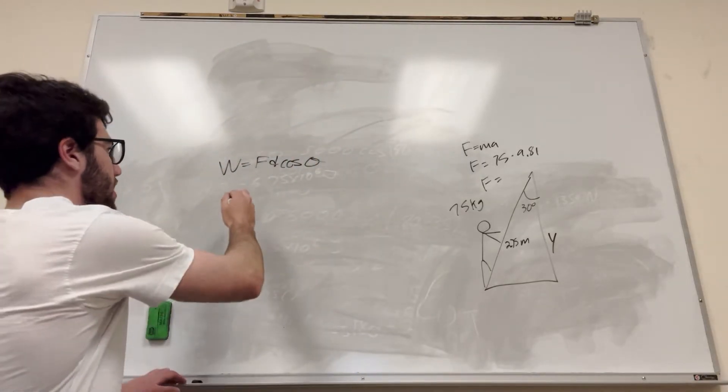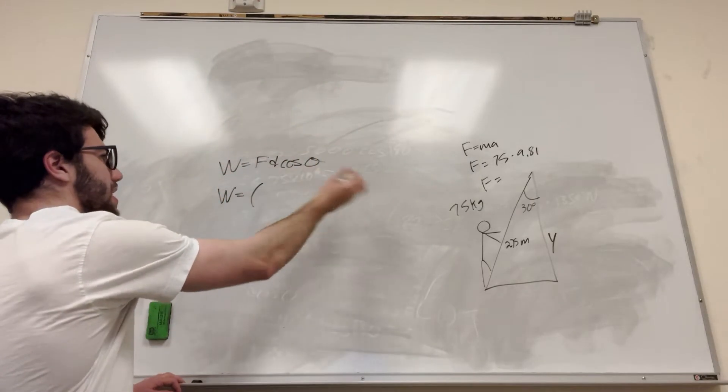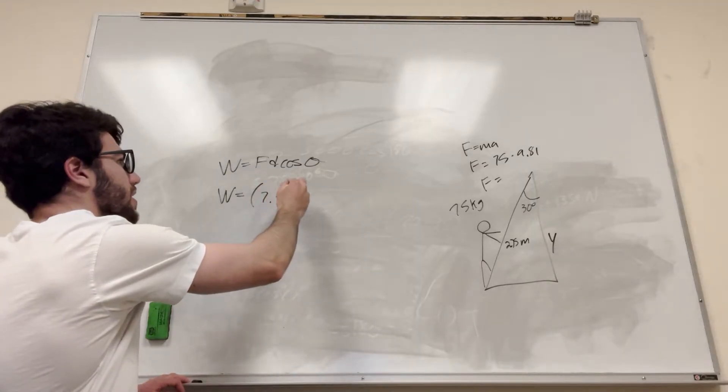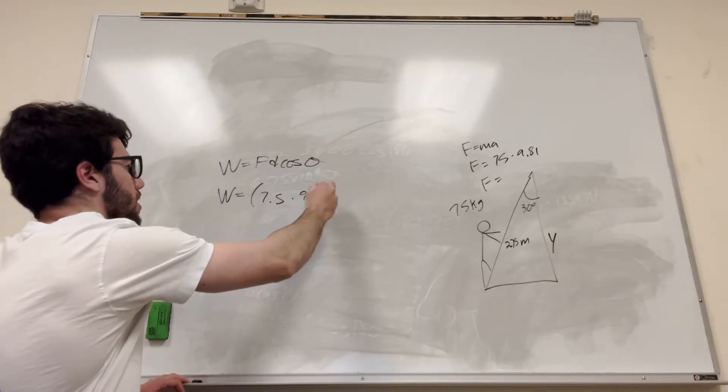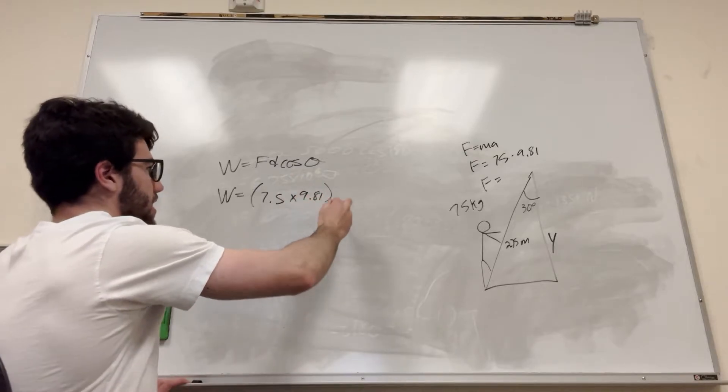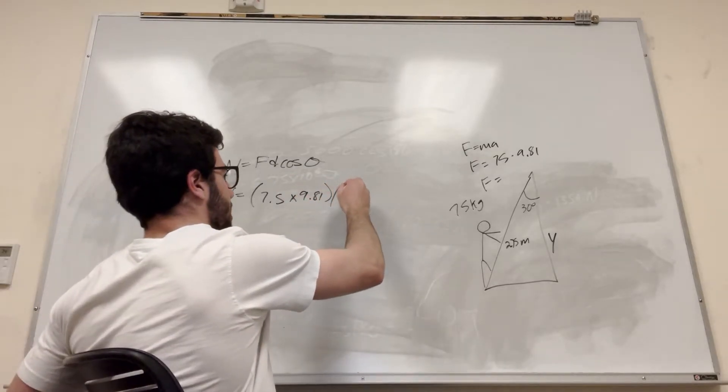Okay, so our surface of work is equal to that force, which is mass times acceleration. We found that earlier, so 75 times 9.81. And then distance, so he goes 2.75 meters, right?